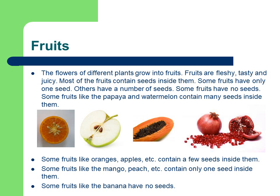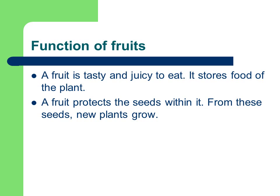What are fruits? The flowers of different plants grow into fruits. Fruits are fleshy, tasty and juicy. Most fruits contain seeds inside them. Some fruits have only one seed, others have a number of seeds, and some fruits have no seeds. For example, papaya and watermelon contain many seeds; oranges and apples contain a few seeds; mango and peach contain only one seed; and banana has no seeds. A fruit stores food of the plant, and it also protects the seed within it, from which new plants grow.